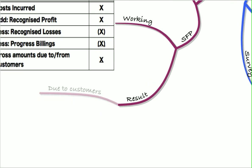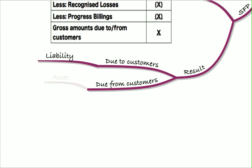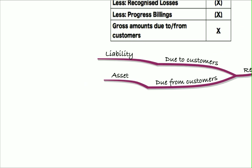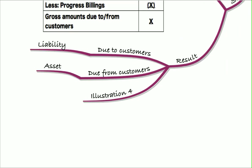So the result can either be due to customers, which will be a liability, or due from customers, which will be an asset. If it's positive, when you do your working, it will be an asset. If it's negative, it will be a liability. And we did a detailed illustration in illustration four.